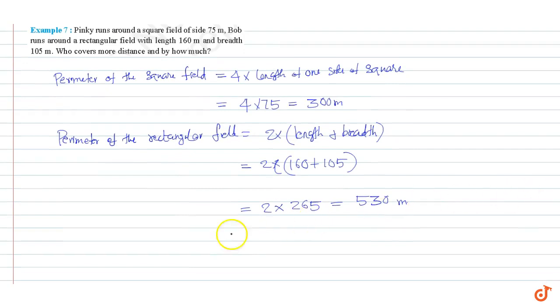530 - 300 = 230 meters. These are our answers.